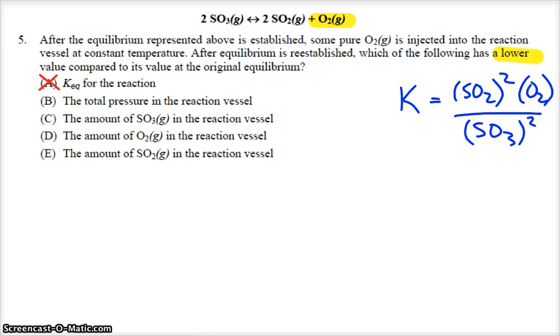Total pressure. Well, if I'm adding more gas, more particles, more collisions, more pressure. That's not lower. The amount of SO3. If I add O2 on the product side, it's going to shift to the left and make more of the SO3. The amount of O2. We're adding O2. We're injecting it. That's not it. Hopefully you find that E, the amount of SO2, and that should match because if I add oxygen and make it go to the left, I'm going to be removing SO2. There will be less SO2 in the reaction vessel after the equilibrium is reestablished.